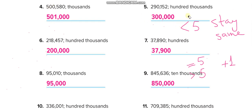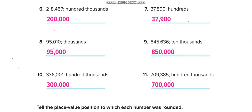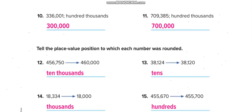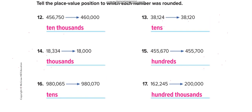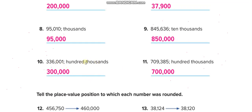Now you have to solve the remaining pieces by yourself and match your answers through this video. From question 12, they ask you to tell the place value position to which each number was rounded. They already rounded the numbers — they are asking you which place value they rounded to. In these questions, they give you the answer and want the place value from you.